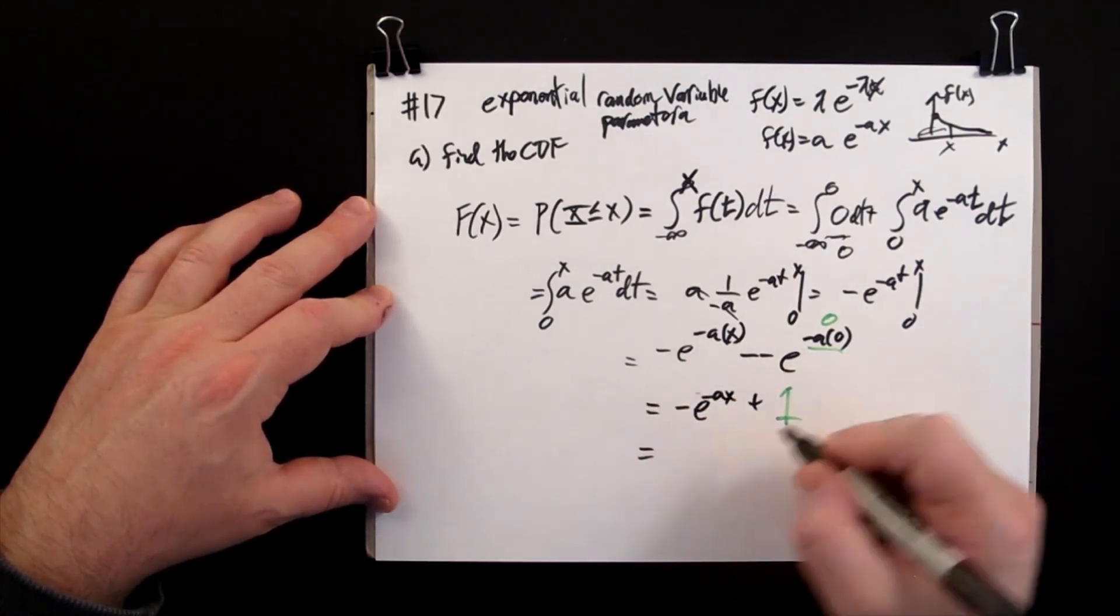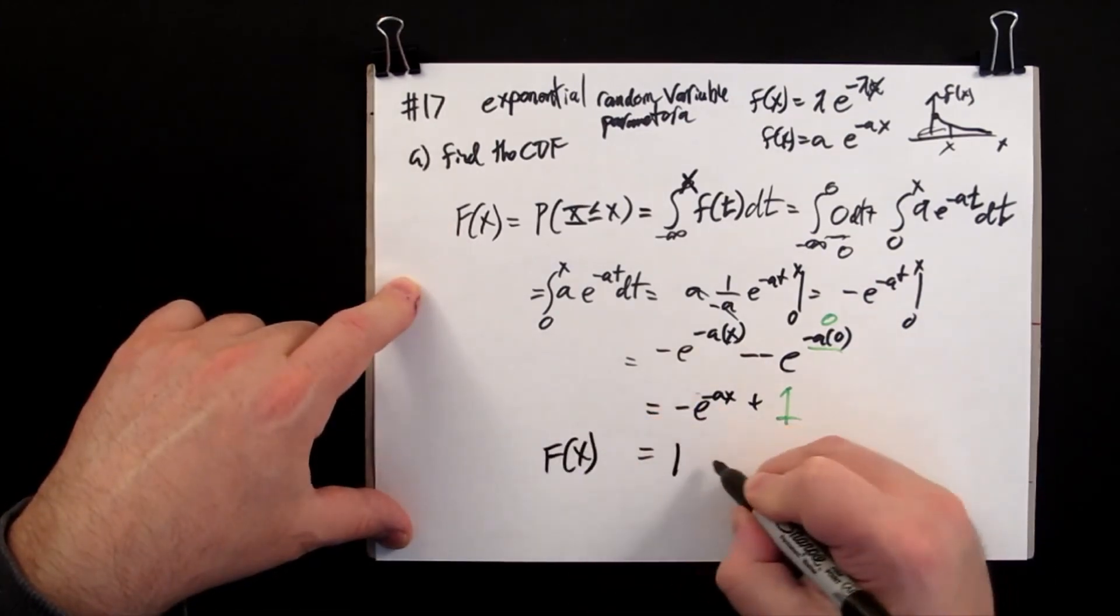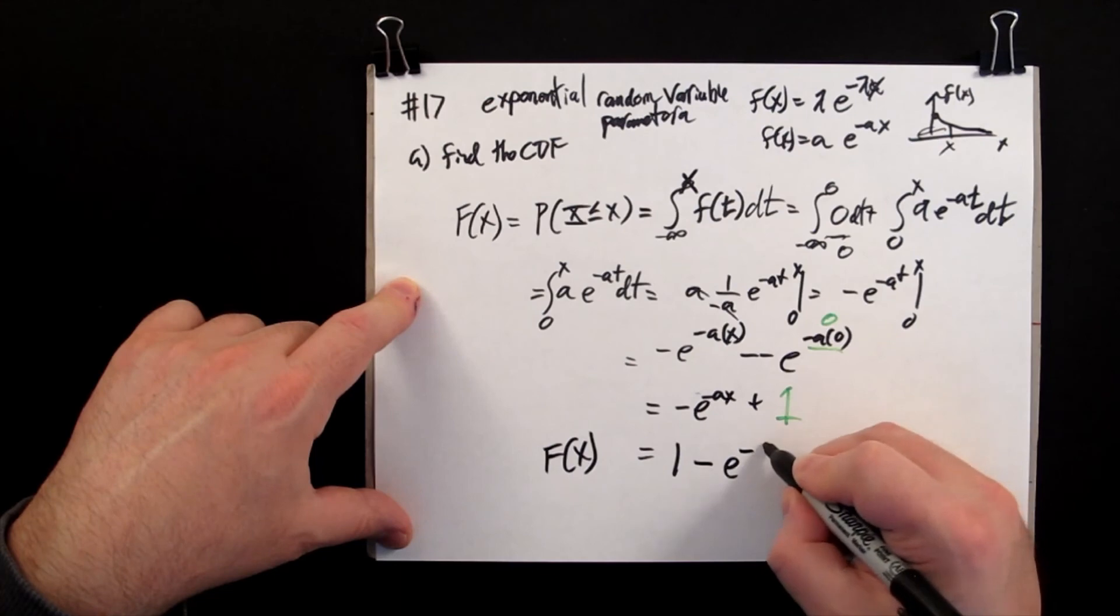So our CDF function is going to be 1 minus e to the minus a x.